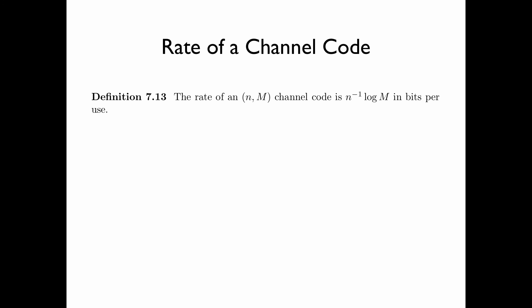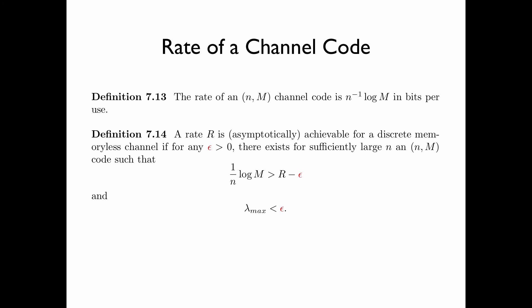The rate of an NM channel code is (1/n) × log m, in bits per use. Recall that n is the block length of the code and m is the size of the message set, and all logarithms are base 2. A rate R is asymptotically achievable for a discrete memoryless channel if, for any ε > 0, there exists for sufficiently large n an NM code such that (1/n) × log m — the actual rate of the code — is greater than R minus ε, and λ_max is less than ε. That is, the rate of the code is arbitrarily close to R, and at the same time λ_max is arbitrarily small.